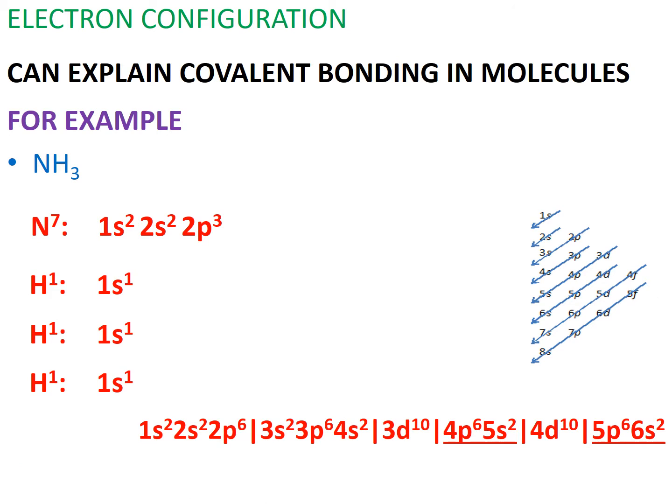We could have written the last three electrons as 2p³, but this can confuse us or prevent us from seeing the unpaired electrons available to participate in a covalent bond. So it's important to expand unfilled subshells like 2p so we can see which electrons are unpaired.